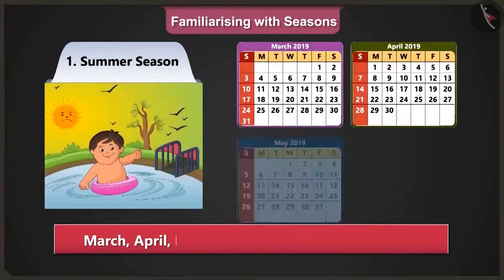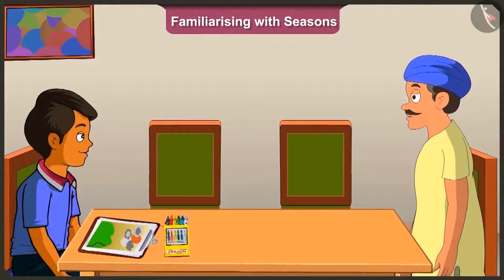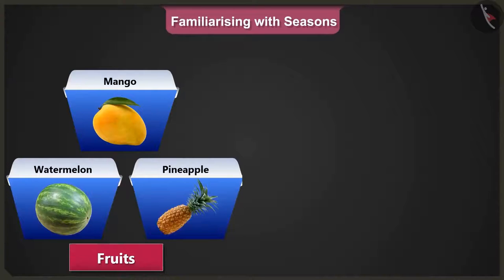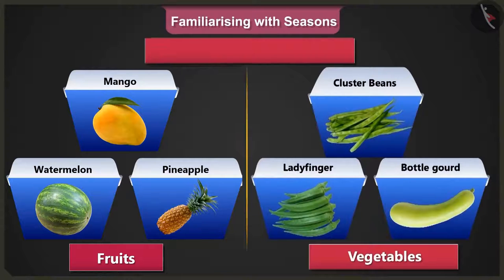March, April, May and June months are very hot, so these are the summer months. In summer, I have school holidays, and mother also brings mangoes for me. Chotu, fruits like mangoes, watermelon, pineapple and vegetables like cluster beans, ladyfinger, gourds all come in the summer season.